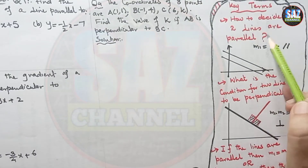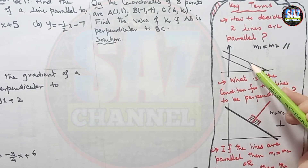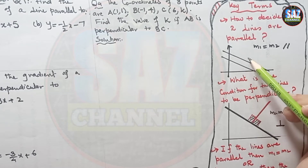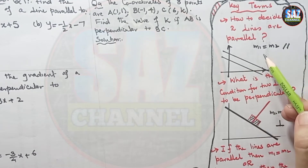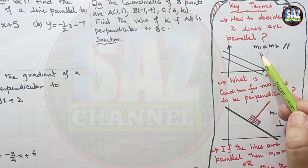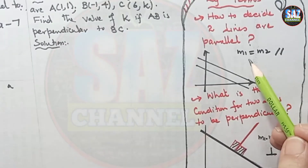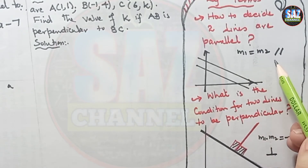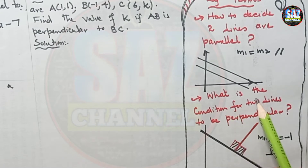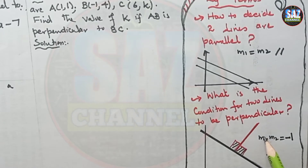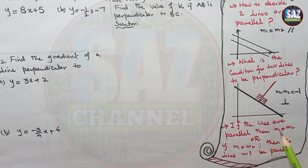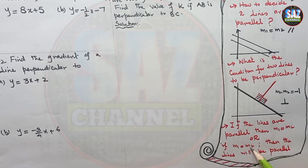How to decide the two lines are parallel: when you are drawing the graph and the lines are found at a certain distance apart and they're not intersecting each other, then the lines will be parallel by looking at the graph. If the gradients are the same, then the lines will be parallel.